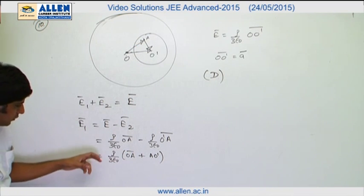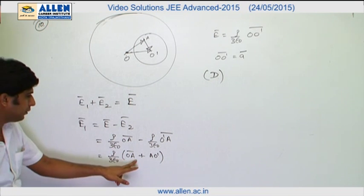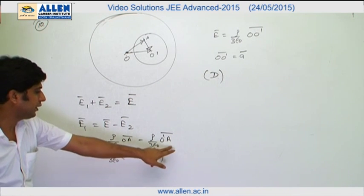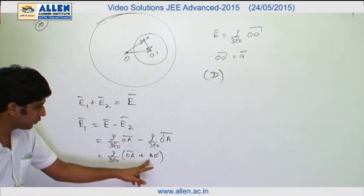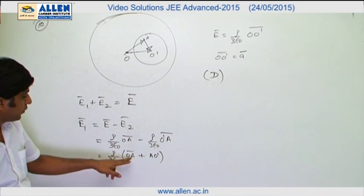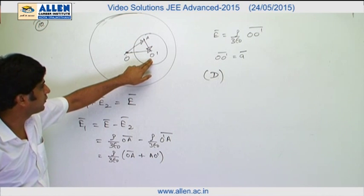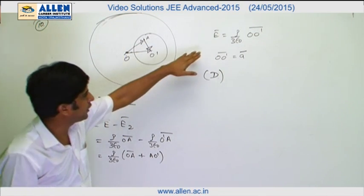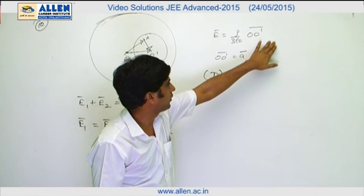From this equation, we can get rho upon 3 epsilon naught OA, and the vector O'A can be written as minus of AO'. Therefore, OA plus AO' can be written. According to triangle rule of vector addition, vector OA plus vector AO' must be equal to vector OO'. Therefore, E equals to rho by 3 epsilon naught OO' vector.